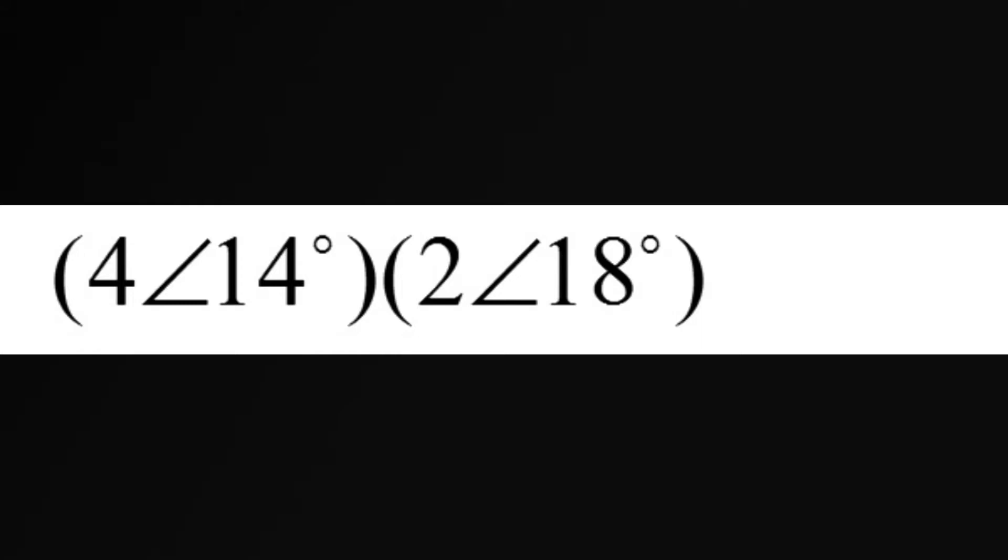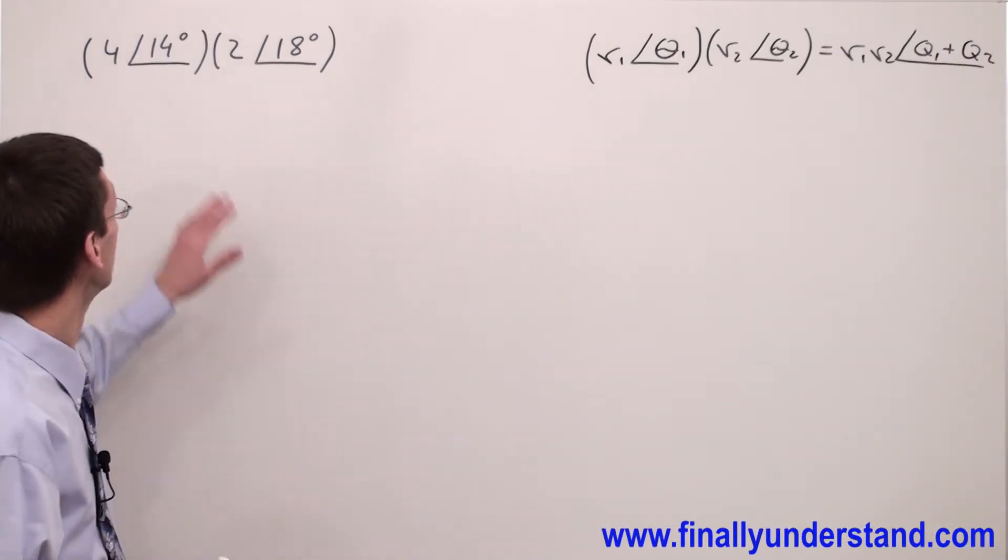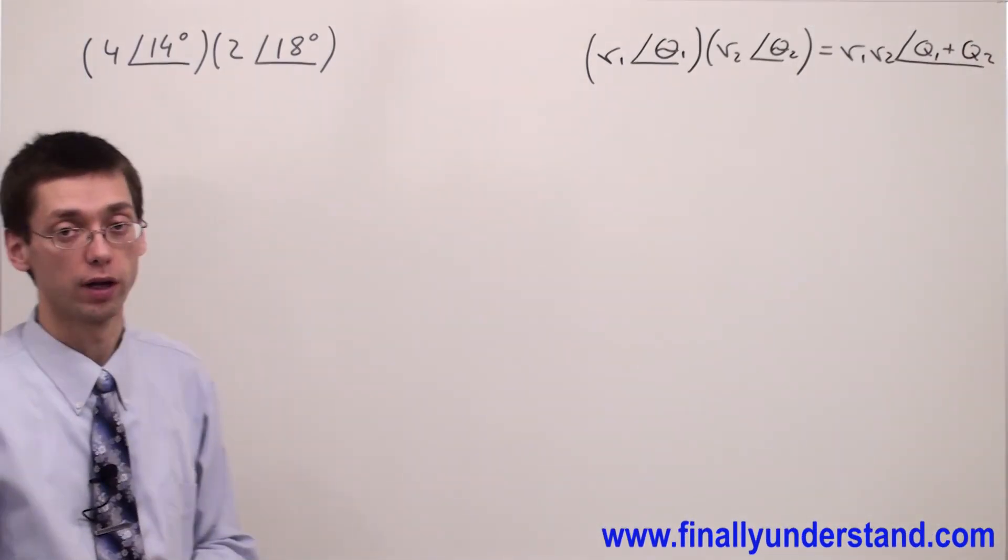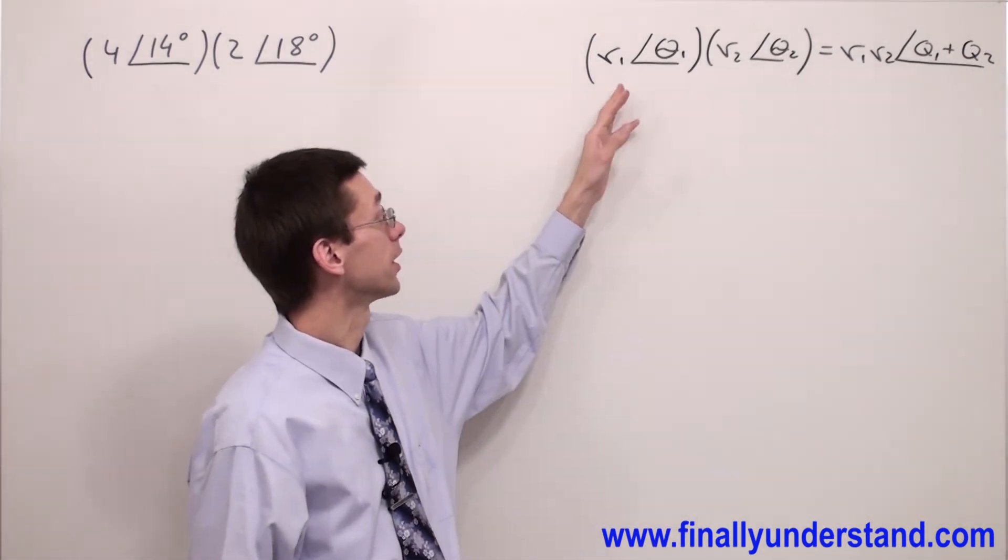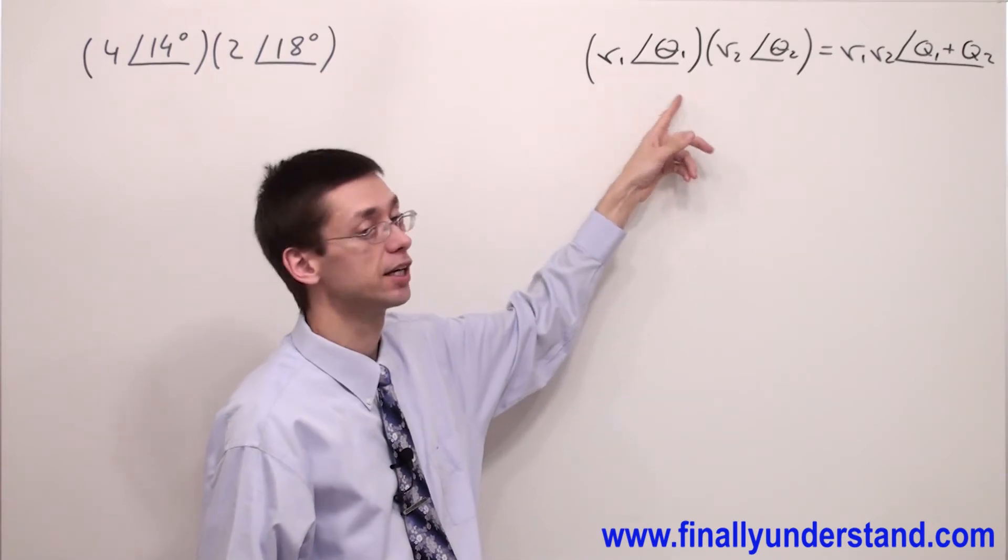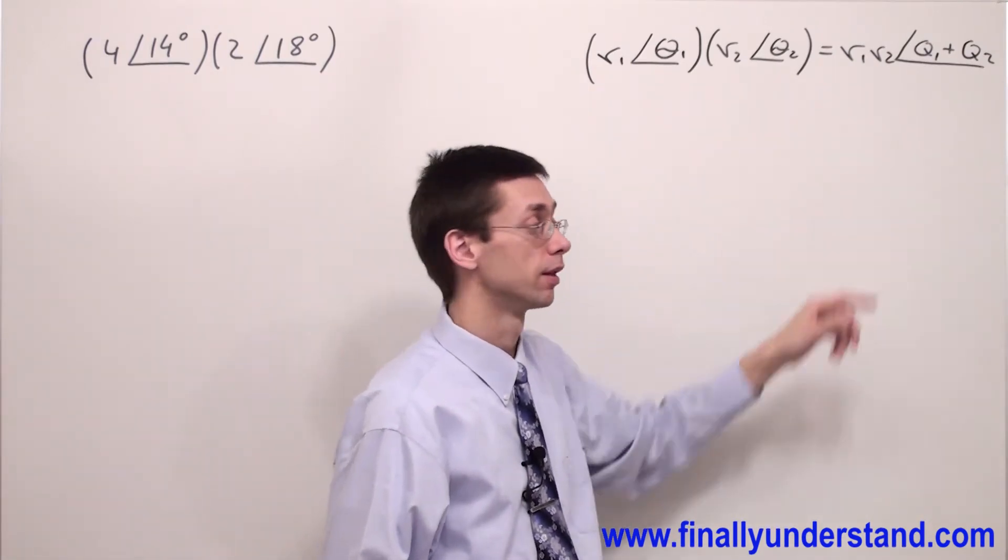This time we're supposed to multiply two complex numbers expressed in polar forms. Anytime you multiply two polar forms, you're supposed to use the formula which says you have to multiply the magnitudes and add the angles.